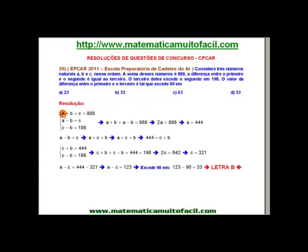A primeira equação diz o seguinte: A mais B mais C é a soma dos três, é 888. Ele fala na segunda equação, a diferença entre o primeiro e o segundo. O primeiro é A, o segundo é B. A diferença entre eles é igual ao terceiro, que a gente sabe que é C, perfeito?